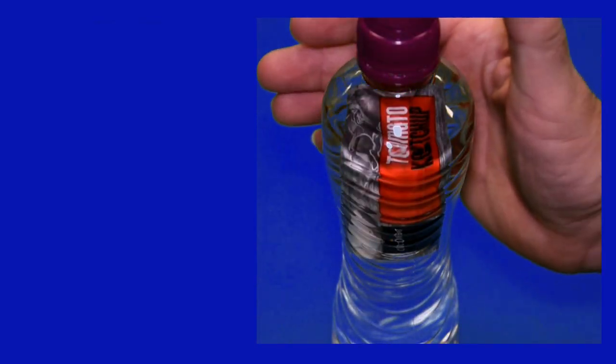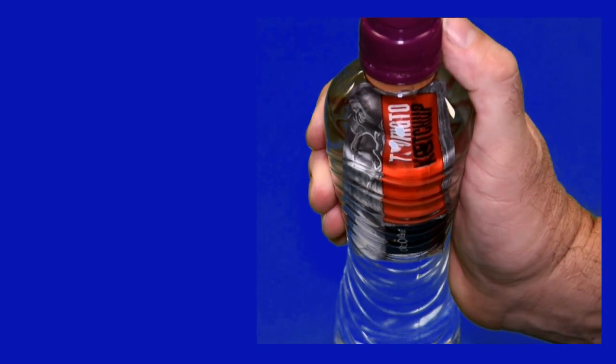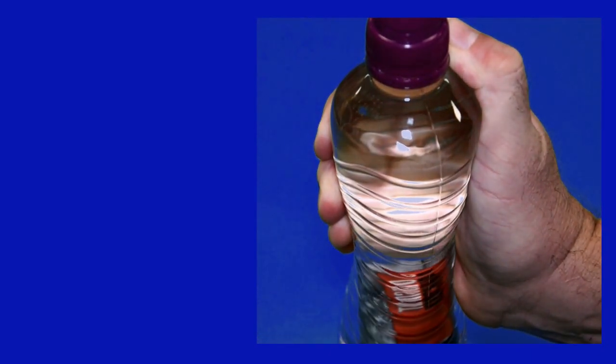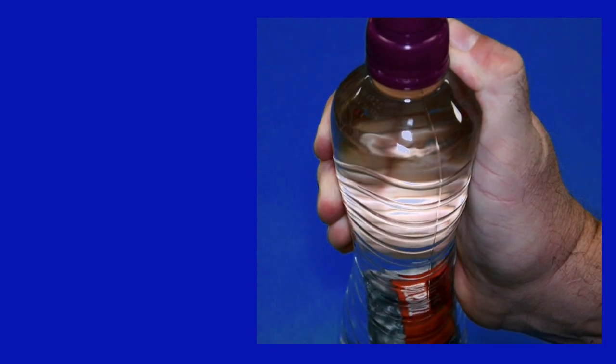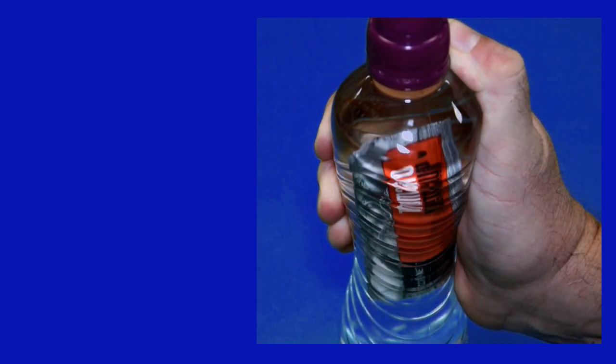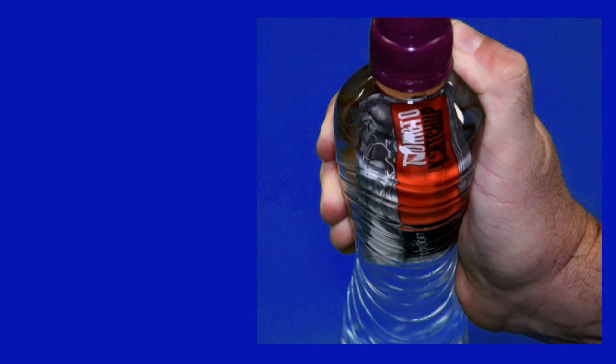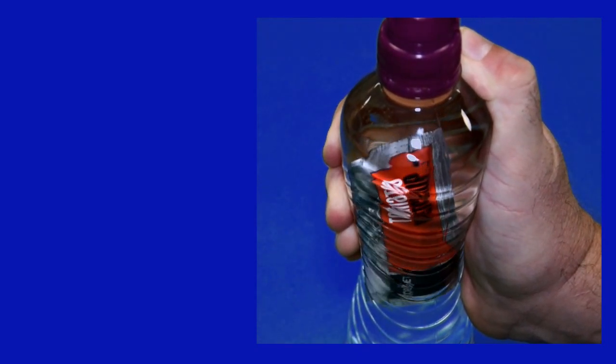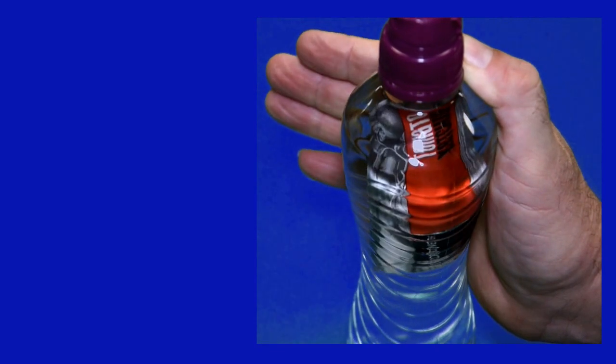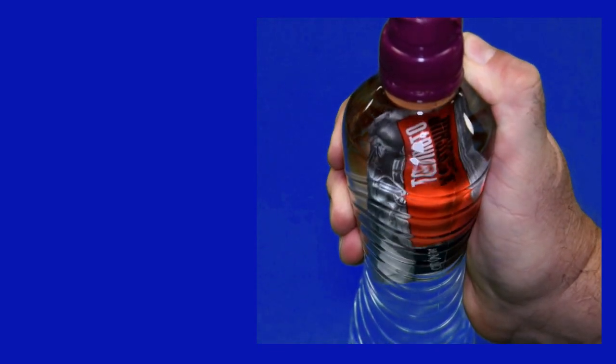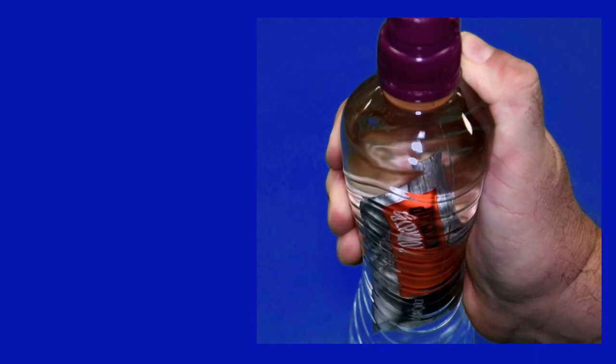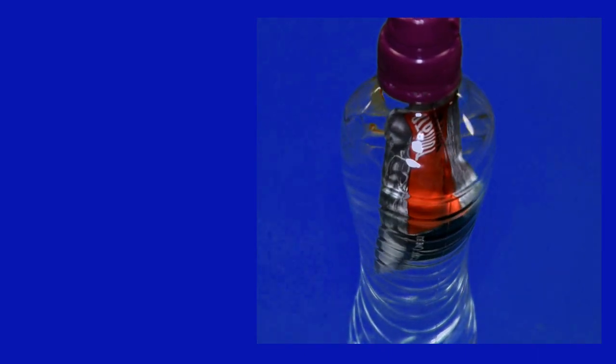A sachet of tomato ketchup has almost exactly the same density of water, but there's a little bit of air. If you squeeze the container, water is incompressible, so the air inside the sachet squeezes, the density increases and the sachet falls down. When you stop squeezing the container, the density is slightly less than water and the sachet comes up again. This is often called the Cartesian diver.